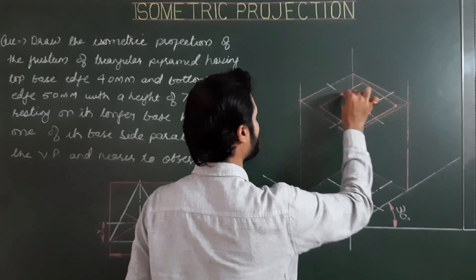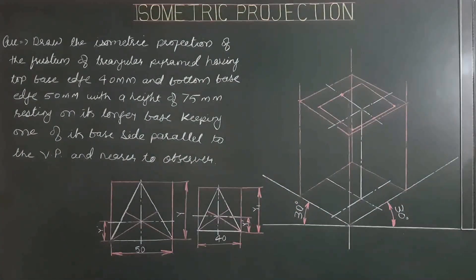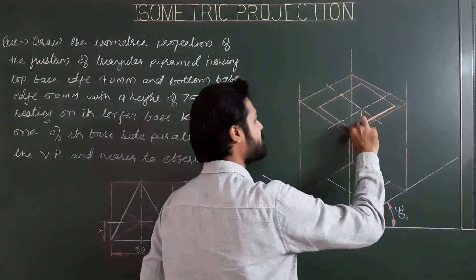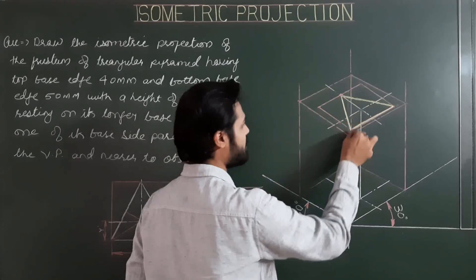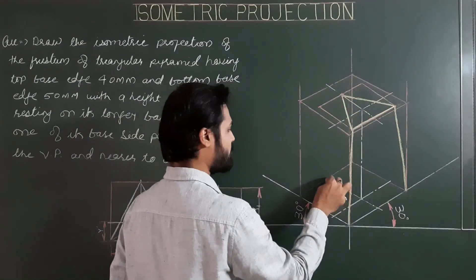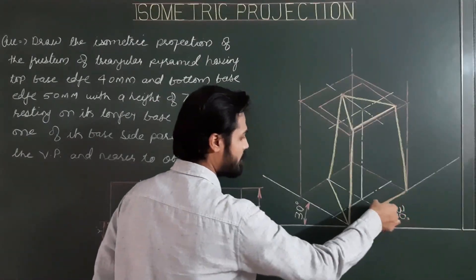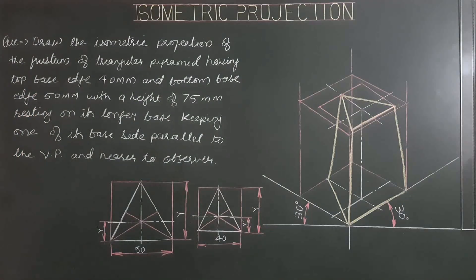This is the first corner, second corner, third corner, and the other two corners. In the last step, we show all visible generators and sides — outlines of the sides. This is the first visible side, second side, third side. From this corner to that corner is a visible generator, and from the last corner to the corresponding corner — these are the visible generators. This is the final isometric projection of the frustum of triangular pyramid resting on its longer base, with an edge of the longer base parallel to VP and nearer to the observer.